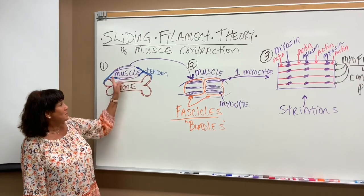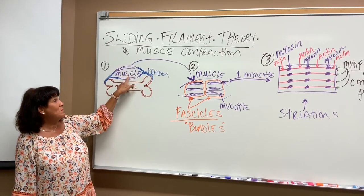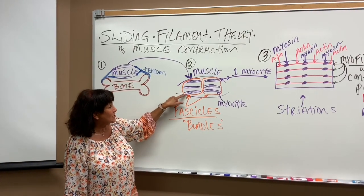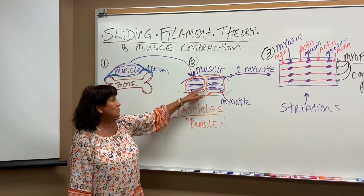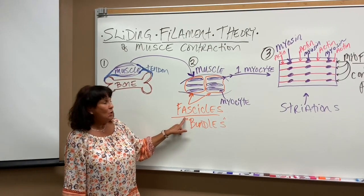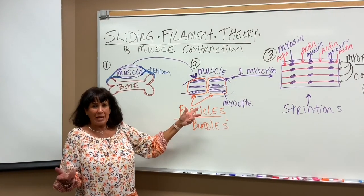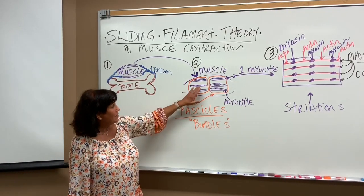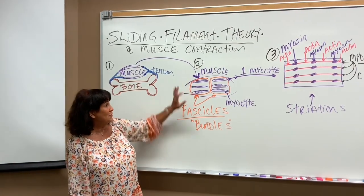Muscles groups - a muscle is actually attached to a bone by tendons. And then what makes up a muscle? In the inside, we have bundles of muscle cells. So these are the myocytes, and then we have perimysium around them, the dense regular CT, and that creates a fascicle or a bundle. So one muscle is actually created by hundreds of bundles of muscle cells, and then within each bundle there can be hundreds of individual muscle cells.